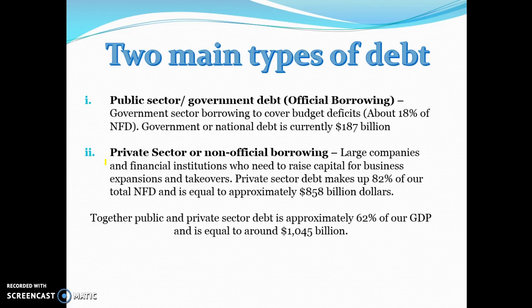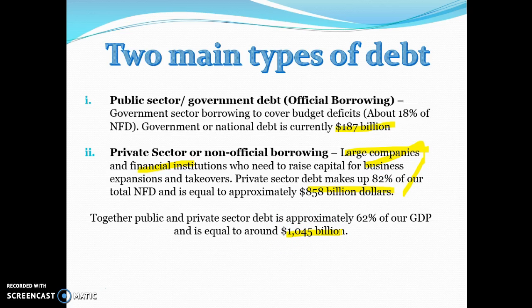The two main types of debt within net foreign debt are public sector debt and private sector debt. Public sector debt is borrowing by the federal government overseas to fund budget deficits, and currently stands at around $187 billion. Private sector debt — the debts of large companies and banks — makes up around 82 percent of total net foreign debt at about $858 billion. Together, both private and public sector debt totals around $1,045 billion.